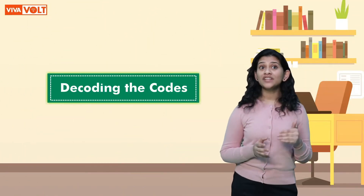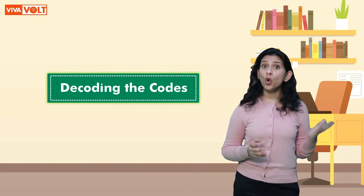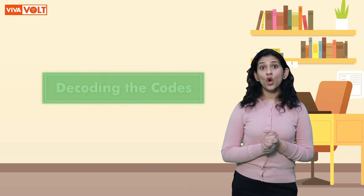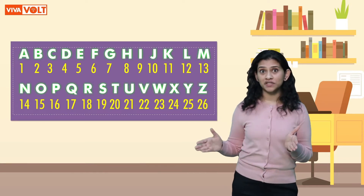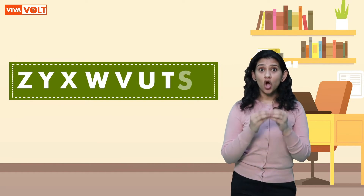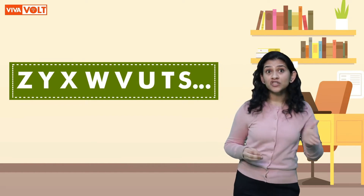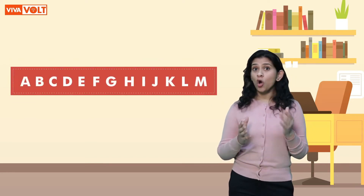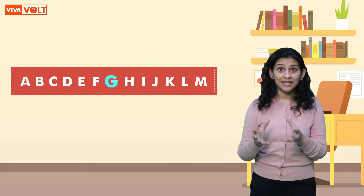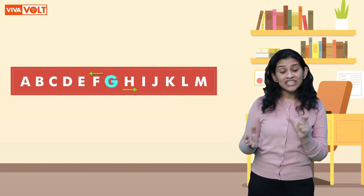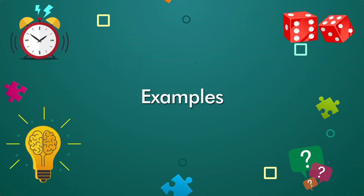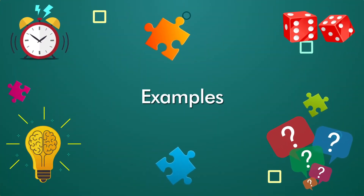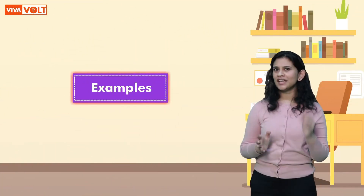While solving questions based on coding and decoding, we need to consider the following points. We need to observe the position of letters in alphabetical order. We need to have a knowledge of letters in reverse order as well. We will also need to have a knowledge of how to find a particular letter before and after each letter in the alphabetical order. Now let's look at a few examples to understand coding and decoding in a better way.